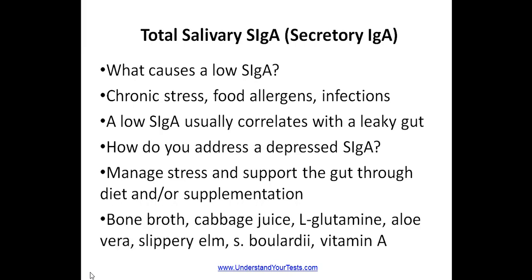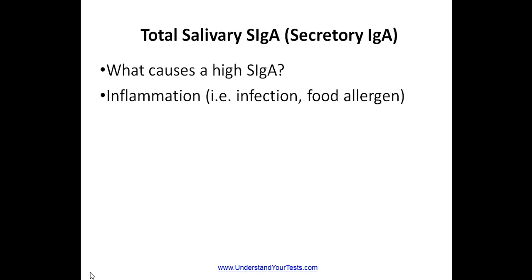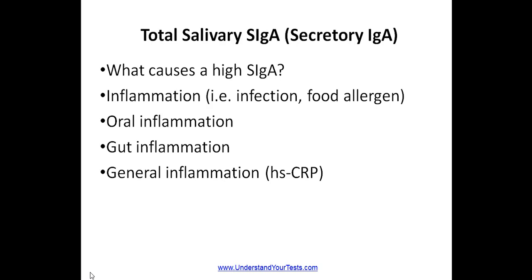Foods which can support gut healing include bone broth and cabbage juice, and some people benefit from taking L-glutamine, aloe vera, slippery elm, marshmallow root, Saccharomyces boulardii, and vitamin A. As for a high secretory IgA, inflammation from infections or food allergens is a common cause. The inflammation can be coming from anywhere — including the mouth, gut, or general inflammation. Sometimes when someone has an elevated secretory IgA, they'll also have an elevated hs-CRP in the blood. An acute stress response can also cause a mild elevation of secretory IgA. To address elevated secretory IgA, you need to find and address the source of inflammation causing it.